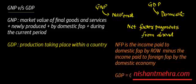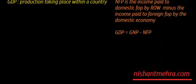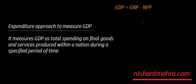Now, moving further into the expenditure approach to measuring GDP. The product method was the sum total of value added; the expenditure method is the sum total of all spending. The expenditure method measures GDP as total spending on final goods and services produced within a nation during a specified period of time.